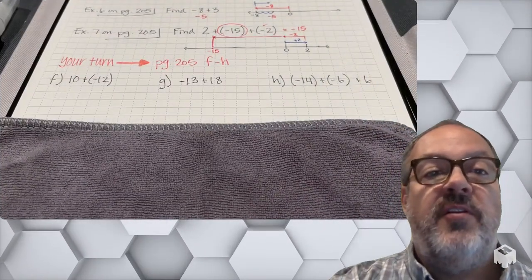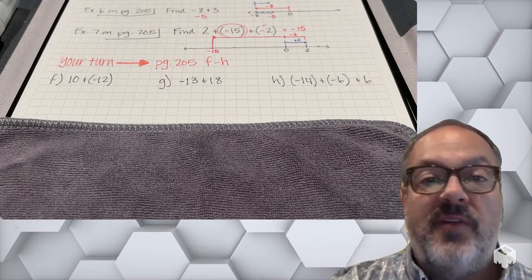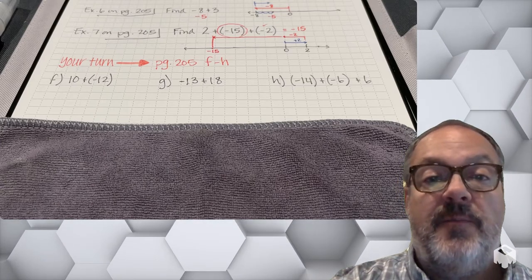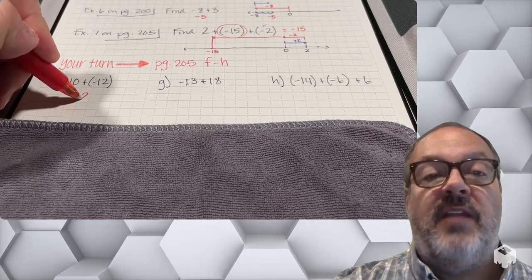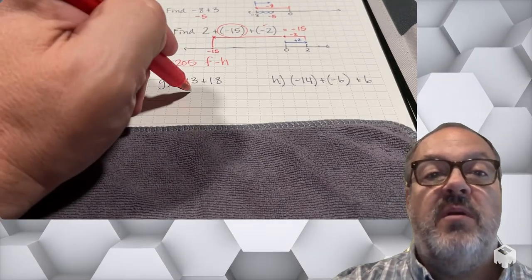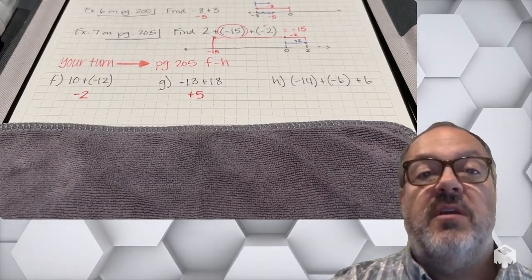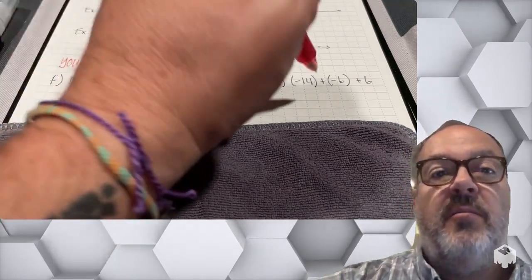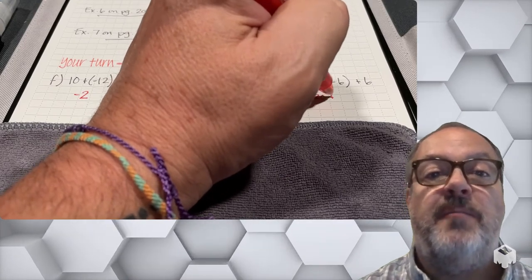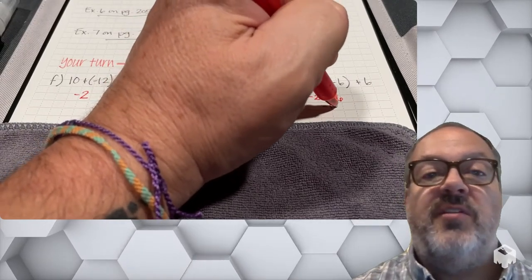Now it's your turn to do problems F through H on page 205. Pause the video, work out the problems, then come back and see how you did. For F, I have a sum of negative 2. Problem G, I have a sum of positive 5. And in H, I'm going to combine some integers: negative 14 plus negative 6 gives negative 20, plus 6 is negative 14.